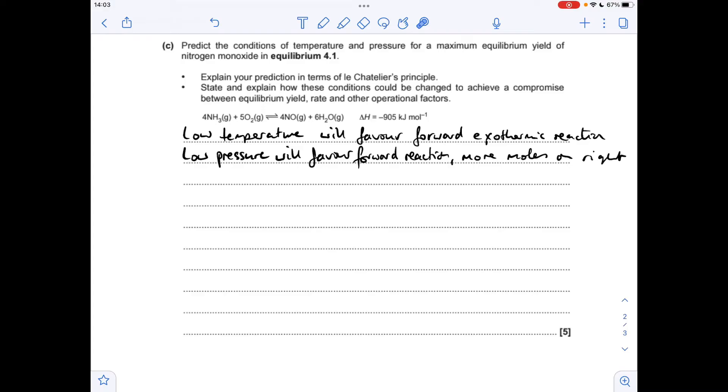So moving on to the second bullet point, we're going to start talking about compromise conditions. The problem with low temperature and low pressure is they both result in a low rate of reaction. So the company is obviously going to have to increase these, but that's going to have some knock-on effect on yield and some other operational factors.